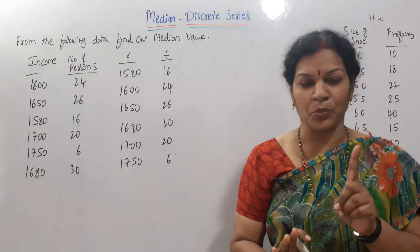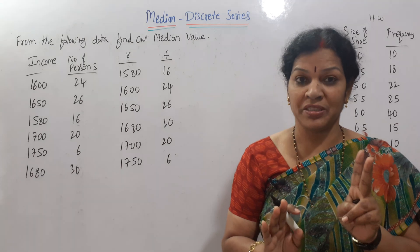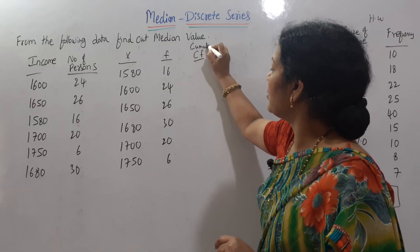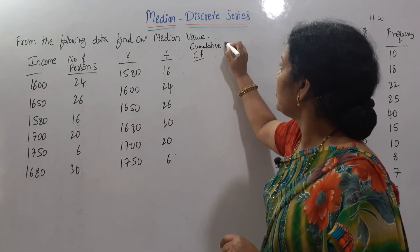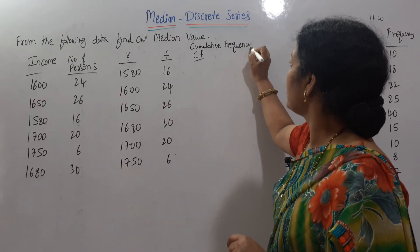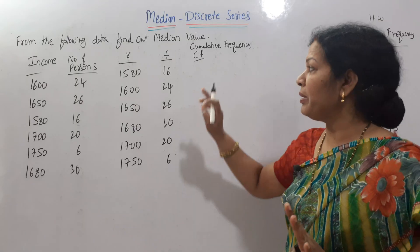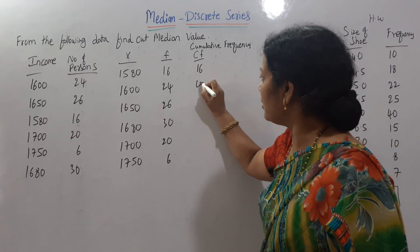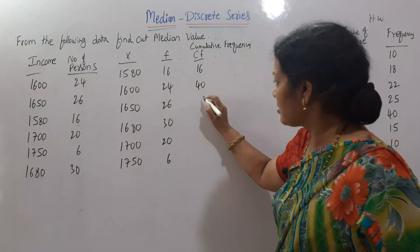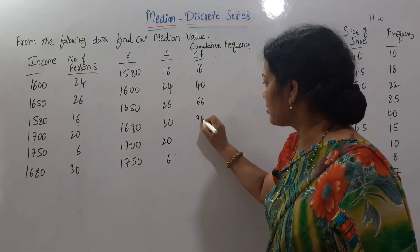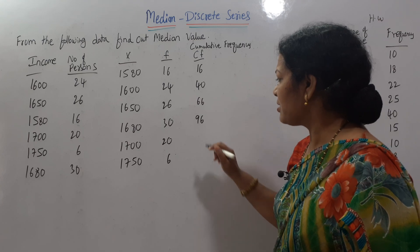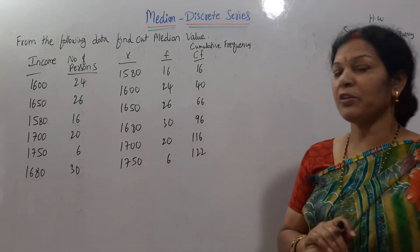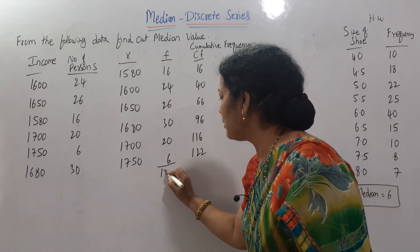Step two is to prepare the cumulative frequency (CF). The first number is taken as it is: 16. Then 16 plus 24 equals 40; 40 plus 26 equals 66; 66 plus 30 equals 96; 96 plus 20 equals 116; 116 plus 6 equals 122. So the cumulative frequency ends at 122. If you total the frequency column also, it comes to 122 only. So n equals 122.